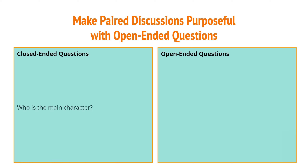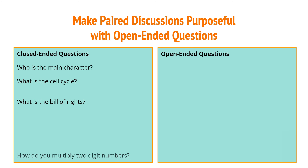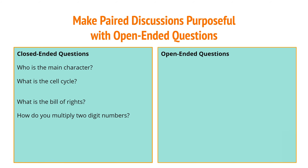Part of the proficiency rubric mentions that the discussions need to be purposeful, and we can make the conversations purposeful by providing the right sort of questions. We can categorize questions as either being closed-ended or open-ended.